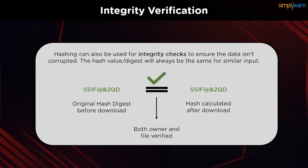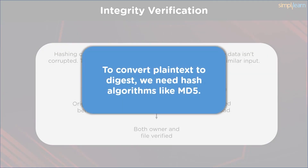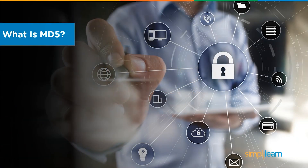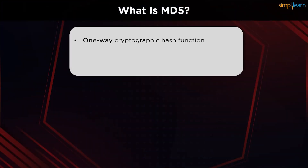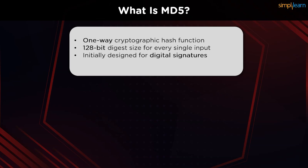To generate hash digests from a standard input, we use hash functions — and an example of such a hash function is the MD5 algorithm. The MD5 hashing algorithm is a one-way cryptographic function that accepts a message of any length as input and returns as output a fixed-length digest value to be used for authenticating the original message. The digest size is always 128 bits, irrespective of the input.